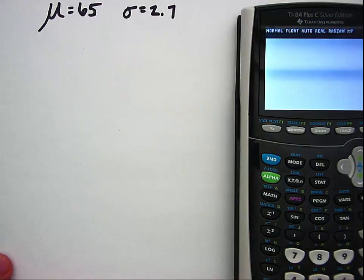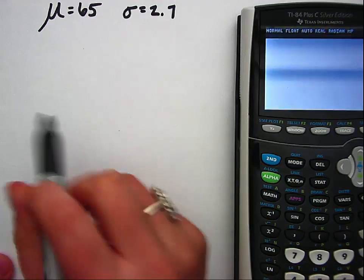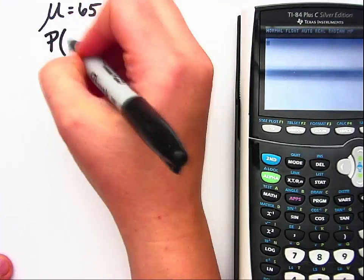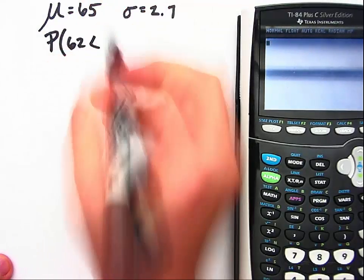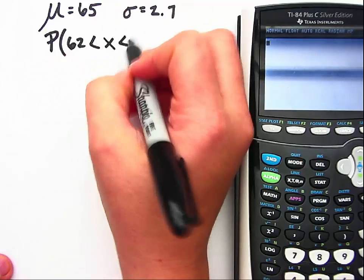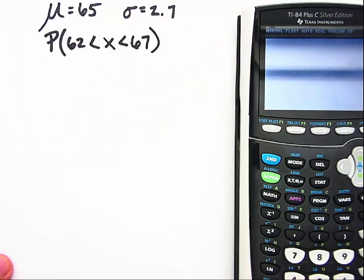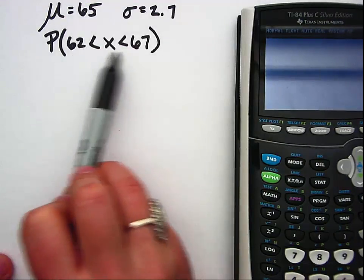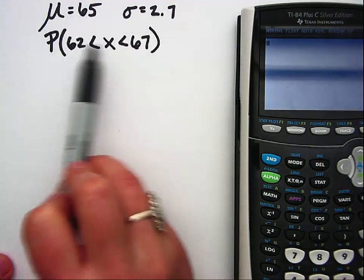Today we are going to calculate the probability for the area in between two heights, so we're interested in having someone who is taller than 62 inches but shorter than 67 inches. So whenever you have a situation that you have two different values, you'll have to calculate two different z-scores.